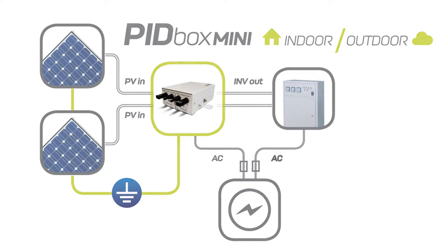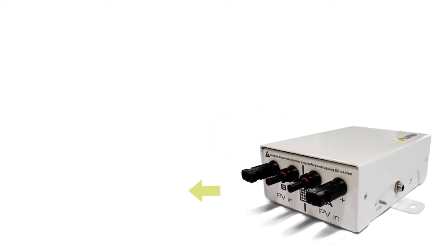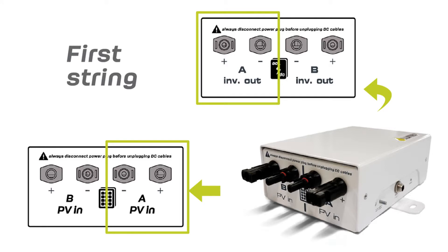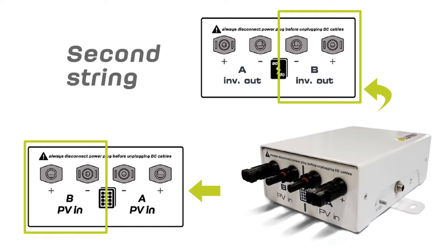The PID Box Mini has two connections on the PV inside and on the INV outside, A and B. This way, you can connect a second string of solar panels which is independent, for example, a second MPPT.